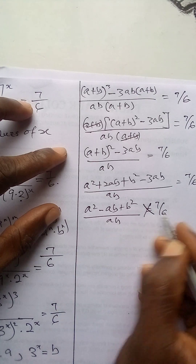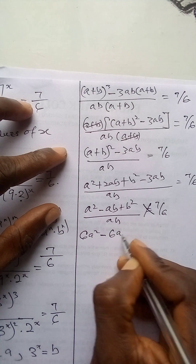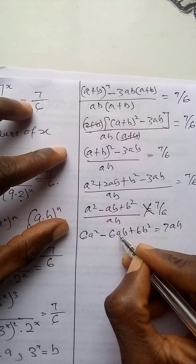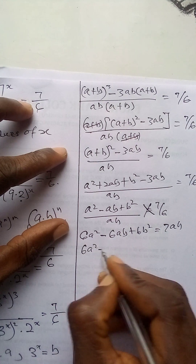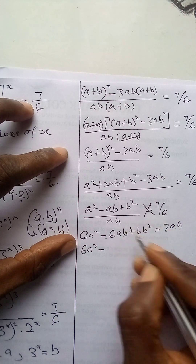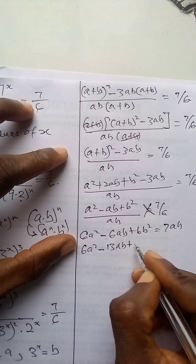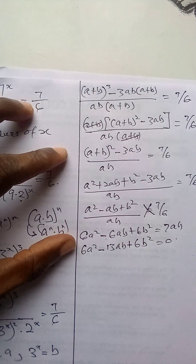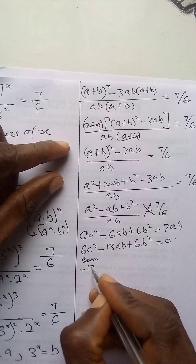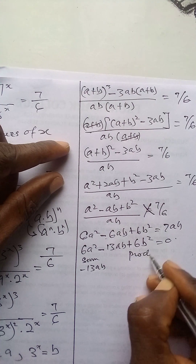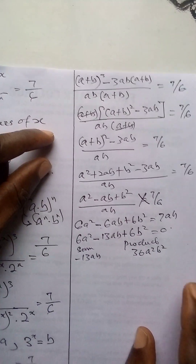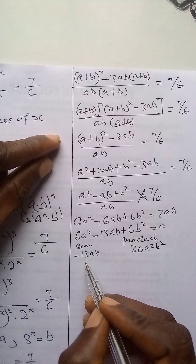Cross-multiplying: 6a squared minus 6ab plus 6b squared equals 7ab. Rearranging: 6a squared minus 13ab plus 6b squared equals 0. This is a quadratic equation. The sum of the middle terms is minus 13ab and the product is 6 times 6 equals 36a²b². We look for factors of 36 that add to 13, which are 9 and 4.